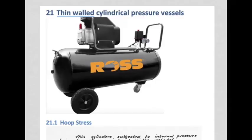This week we look at thin-walled cylindrical pressure vessels. An everyday example of such a vessel would be something like this compressor tank — a small portable workshop compressor. The tank is cylindrical, round in cross-section, and has semi-hemispherical ends. You can see a welded joint over there, and there's more than likely another joint underneath. This vessel is made of steel.